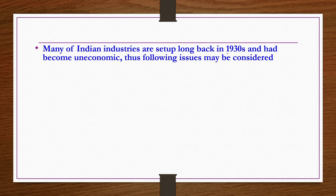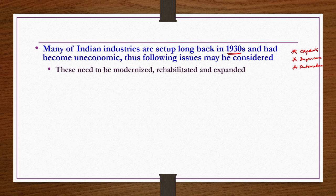Many Indian sugar industry plants were set up in the 1930s and have become less economic. To improve their economic viability, steps should include: improving plant capacity, improving sugarcane production, and importantly, automation of the plants. These plants need to be modernized, rehabilitated, and expanded with increased capacity.